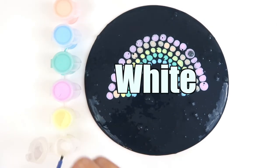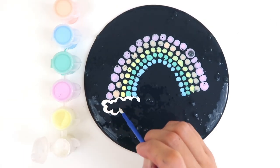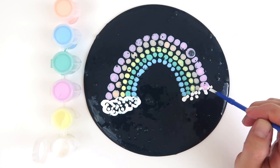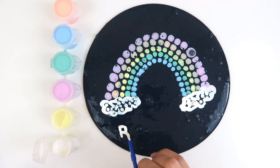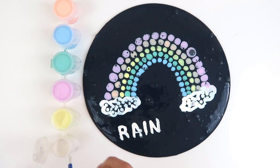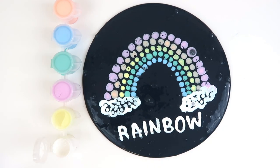And white. Let's add in some white clouds. Can you follow along as I write down rainbow? R, A, I, N, B, O, W. Rainbow.